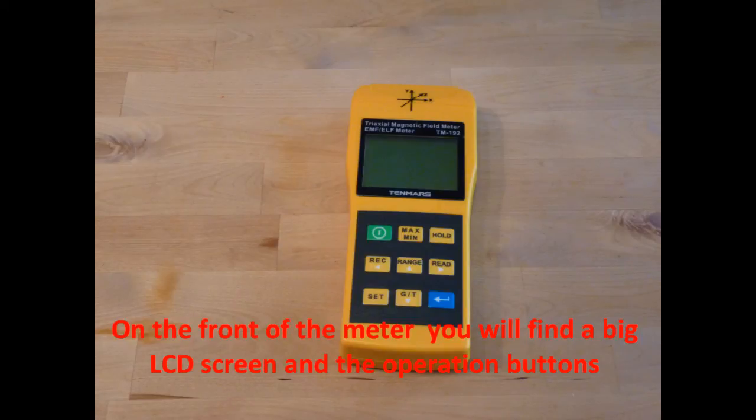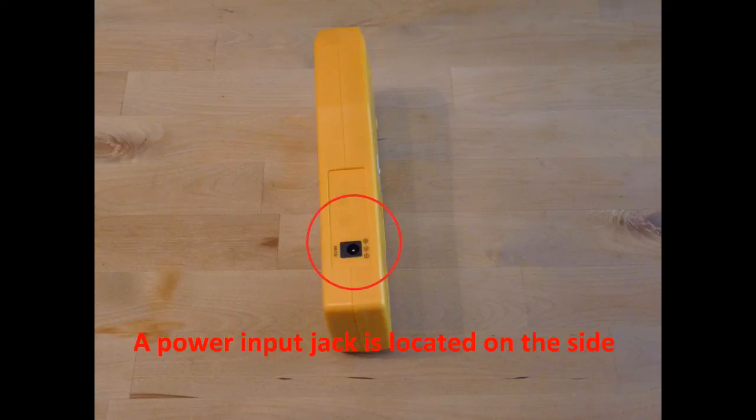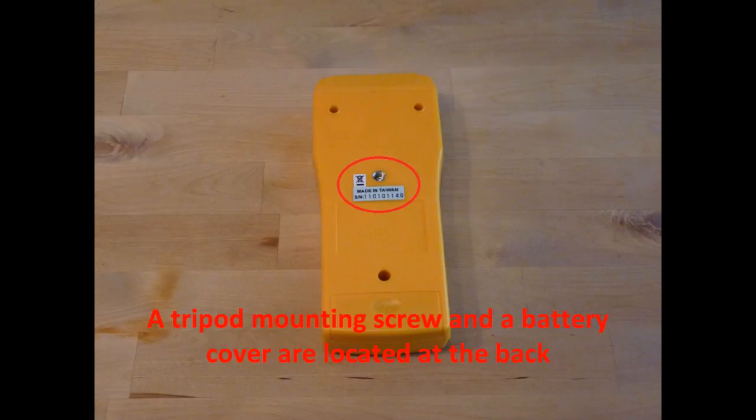On the front of the meter you will find the big LCD screen and the operation buttons. A power input jack is located on the side of the device. A tripod mounting screw and a battery cover are located at the back.